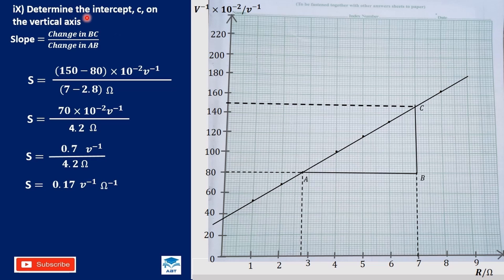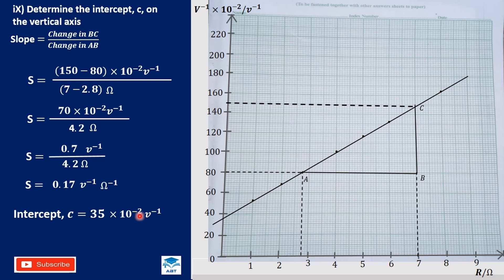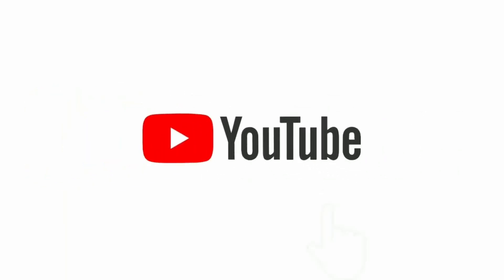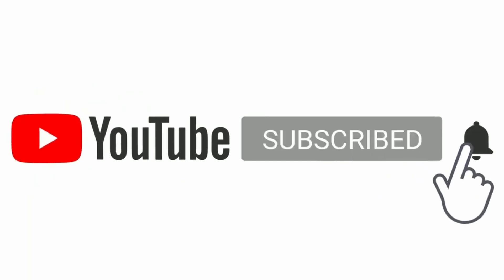We are going to determine the intercept C on the vertical axis. The line of best fit cuts the vertical axis, and reading the value: this is 20, 30, 32, 34, 35 — so the intercept is 35 times 10 exponent negative 2 per volt, which equals 0.35 per volt. This is the intercept on the vertical axis.